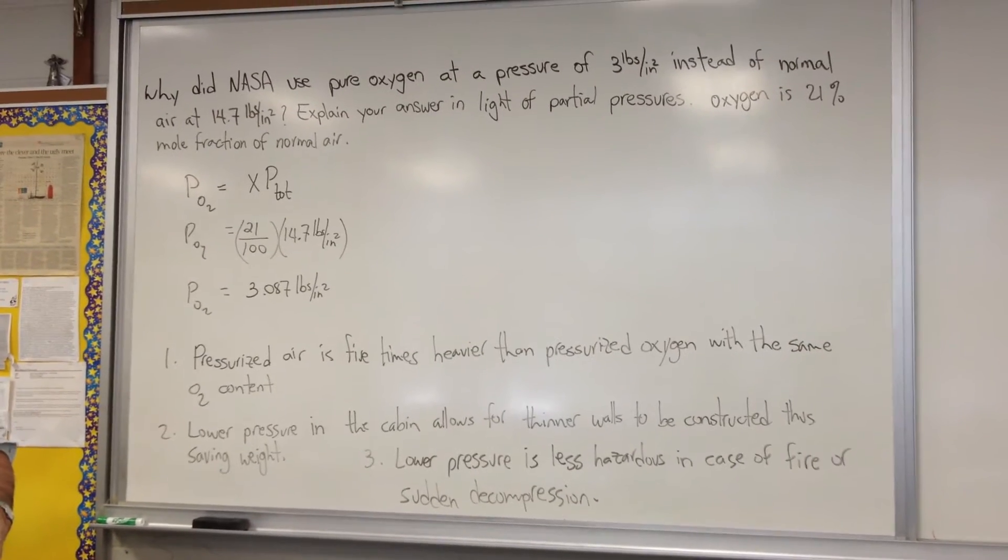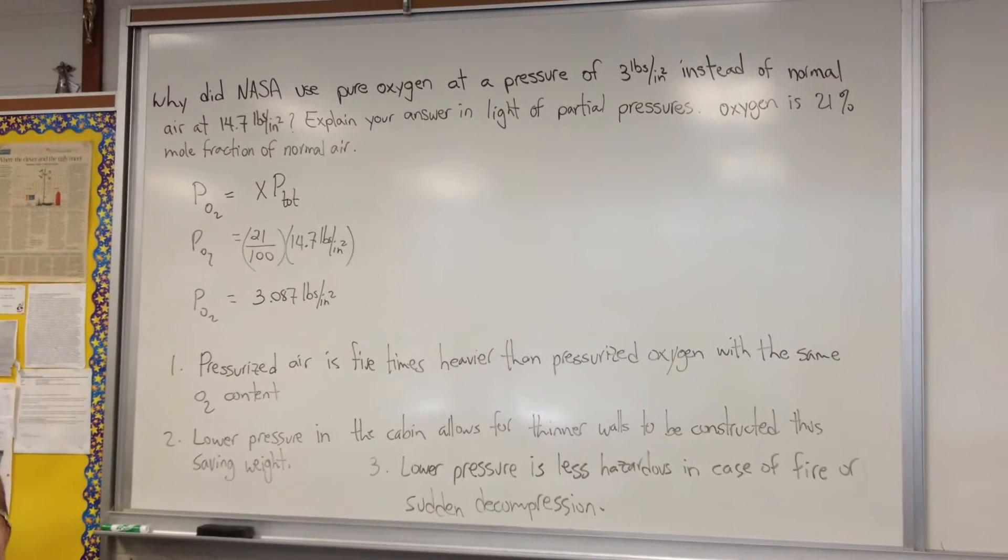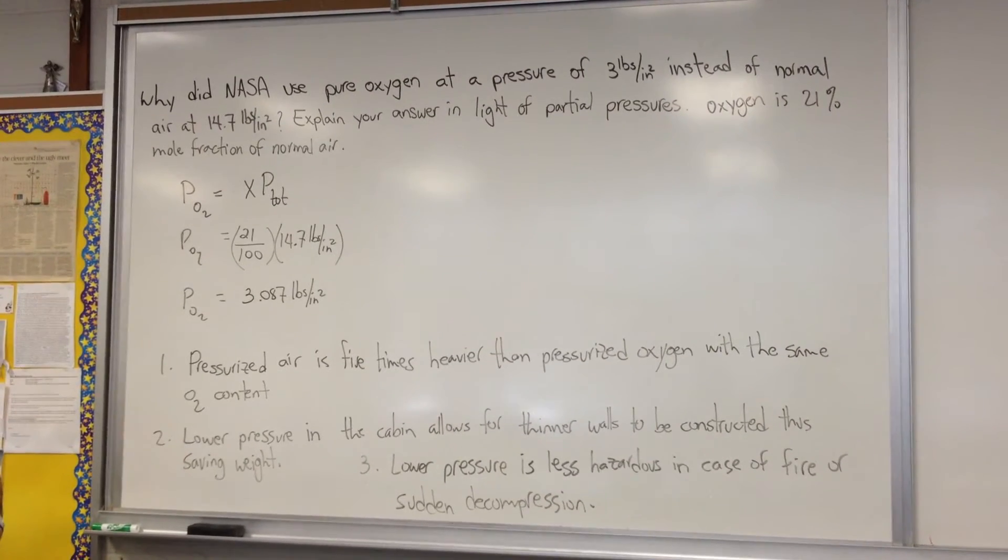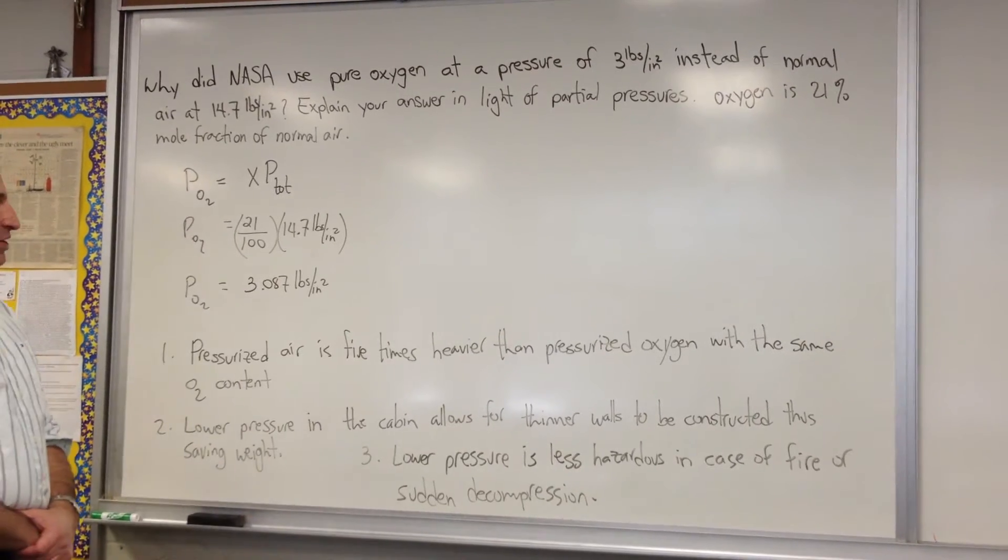Okay, why did NASA use pure oxygen at a pressure of 3 pounds per square inch instead of normal air at 14.7 pounds per square inch? Explain your answer in light of partial pressure.